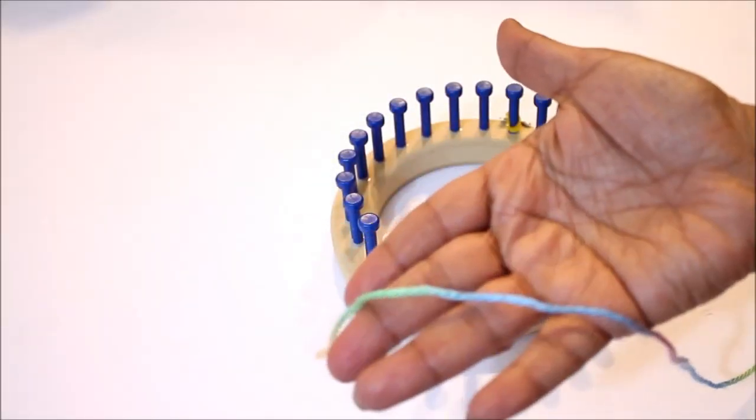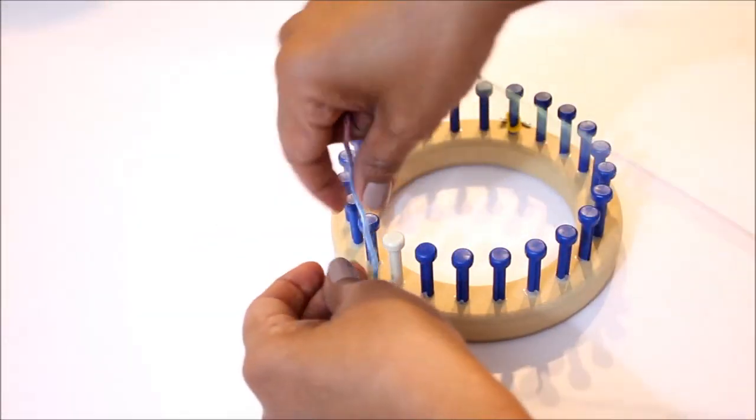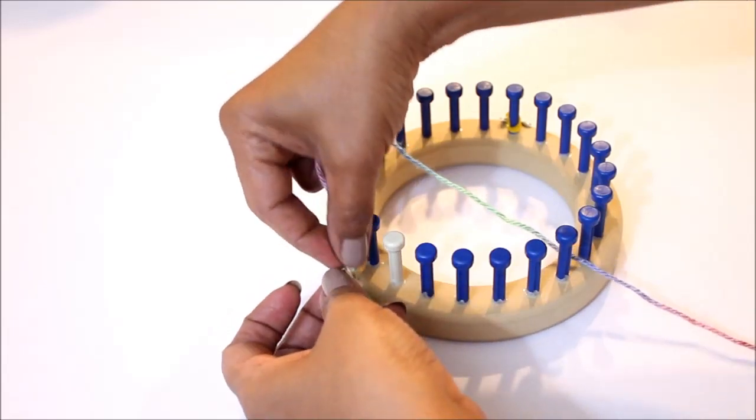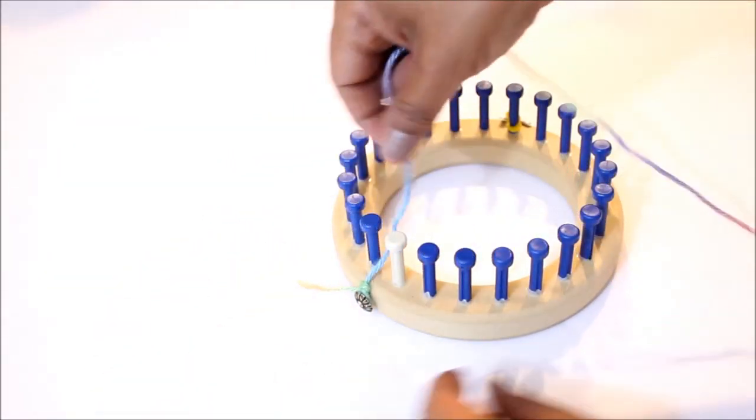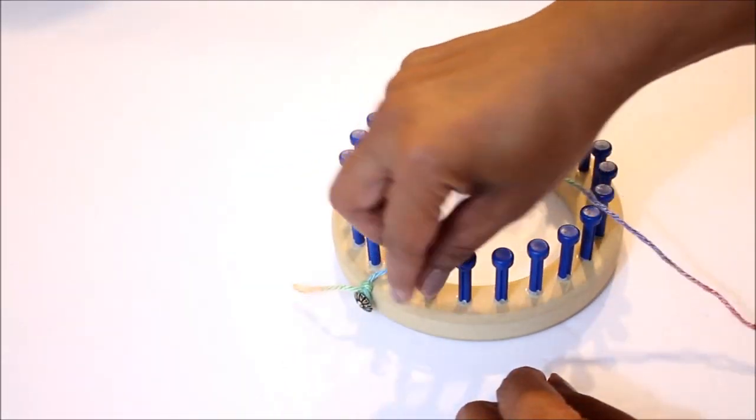We're working with a single strand of worsted weight yarn. Just secure it to your anchor peg or if you don't have one use the loom and then you're gonna wrap 18 pegs.